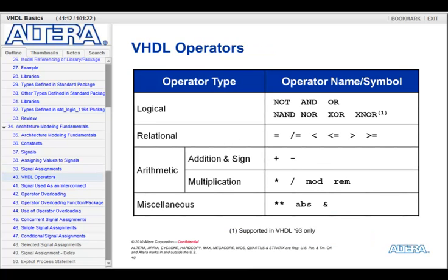To generate logic, we use VHDL operators. The operators can be arranged into logical, relational, arithmetic, and miscellaneous categories. For logical operators, we have NOT, AND, OR, NAND, NOR, XOR, and XNOR. As a note, XNOR is supported in VHDL 93 only.